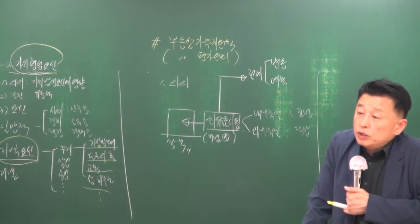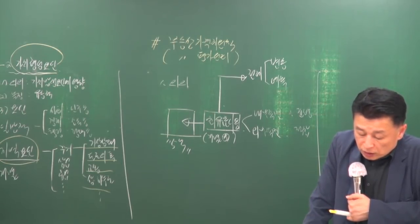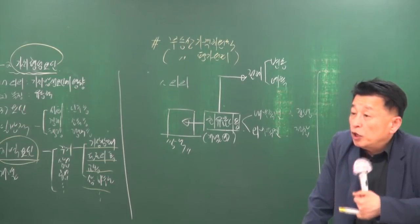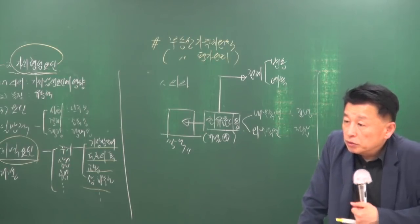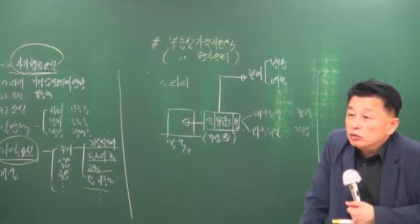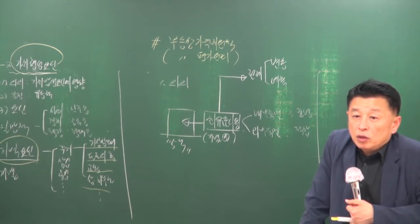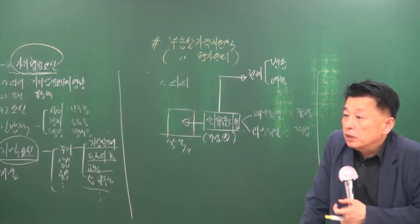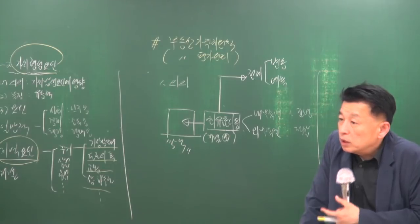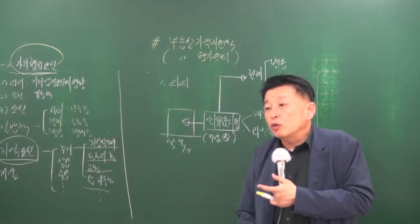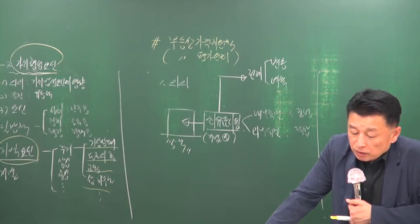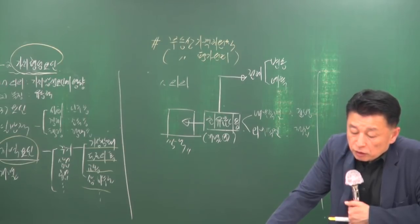부동산의 가치는 최유효 이용 상태를 전제로 판정해야 합니다. 최유효 이용 상태를 기준으로 평가해야 하는 이론적 근거는 부동산 특성인 부중성과 용도의 다양성입니다. 최소한 이용을 하지 않으면 낭비가 되고, 용도를 변경하면 원래 용도로 되돌아가기 어렵습니다. 따라서 항상 최유효 이용 상태를 기준으로 평가해야 합니다. 특수상황으로는 초과 토지와 잉여 토지가 시험에 출제된 바 있습니다.